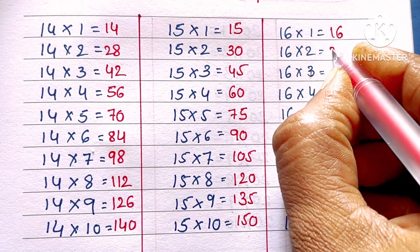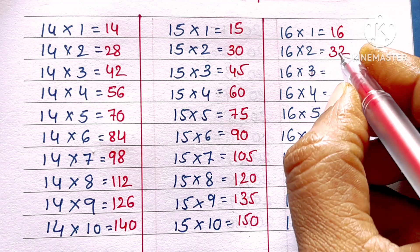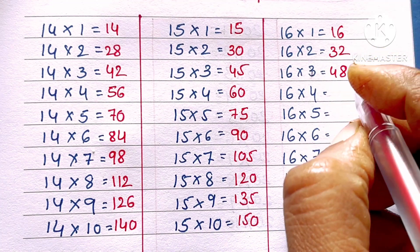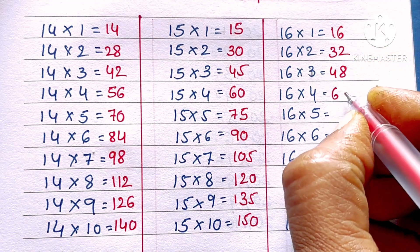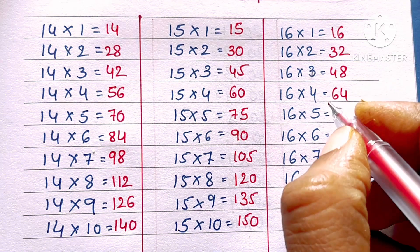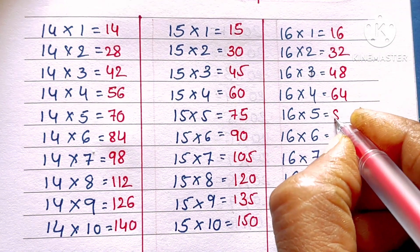16 ones are 16, 16 twos are 32, 16 threes are 48, 16 fours are 64, 16 fives are 80.